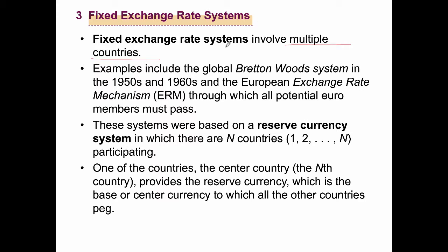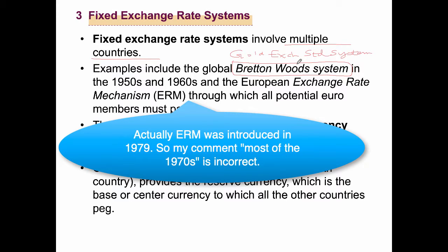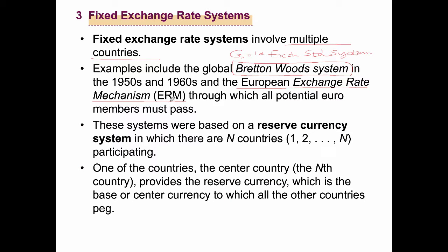One example of a fixed exchange rate system that was put into practice was from the end of World War Two until the early 1970s — the Bretton Woods system, or gold exchange standard. More recently, during most of the 1970s through the 80s and 90s, some European countries had their own system called the European Exchange Rate Mechanism, or ERM. The member countries of that system later became members of the Eurozone. These systems were based on a reserve currency system.